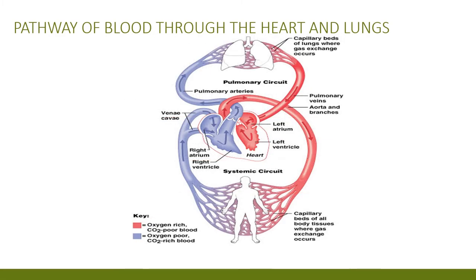The pathway of blood through the heart and lungs: deoxygenated blood comes into the right atrium, to the right ventricle, up through the pulmonary trunk to the lungs. In the lungs, capillaries pick up oxygen from the breathed-in air. Then they go to the pulmonary veins, to the left atrium, into the left ventricle, and up through the aorta to the rest of the body.